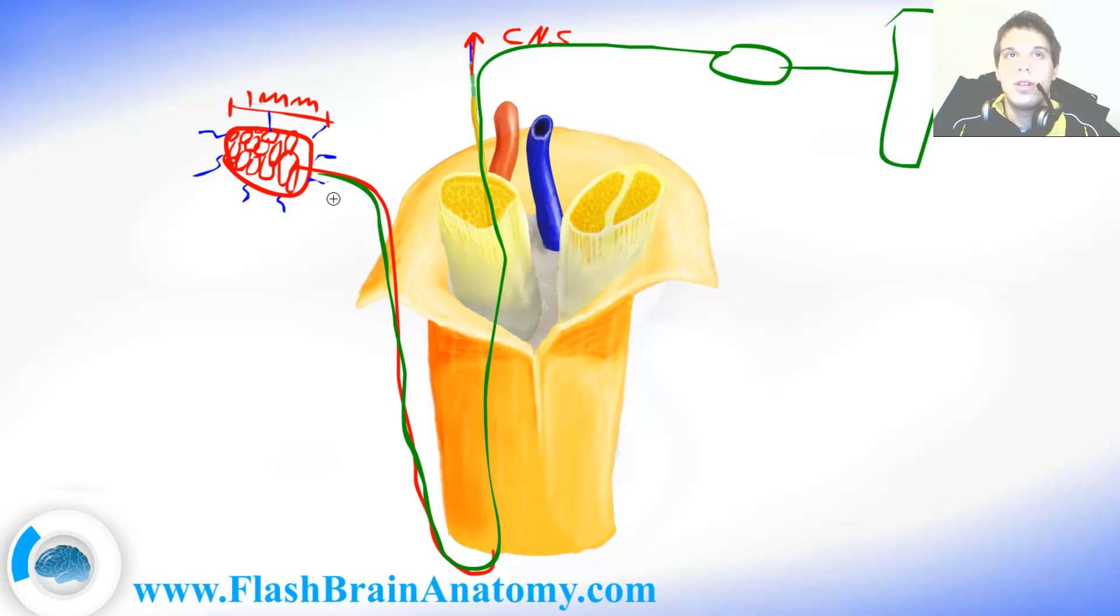In its definition the neurite can never transport the signal towards the cell body because the cell body is here in the spinal ganglion. So according to its function it is a dendrite not an axon.